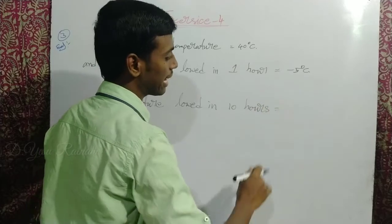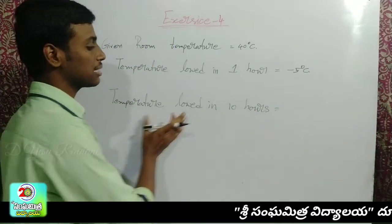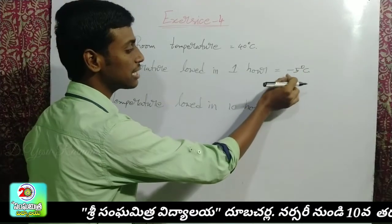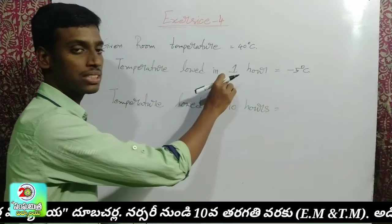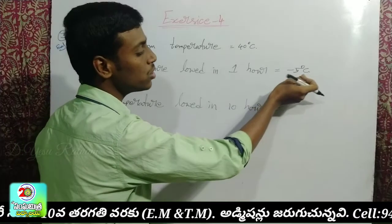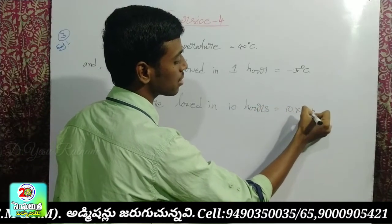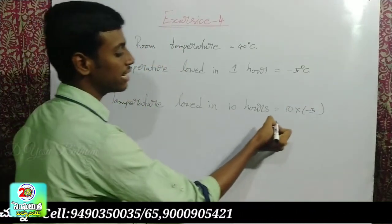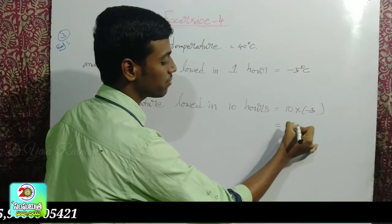10 hours after, the temperature goes down. At 1 hour: minus 5 degrees. At 2 hours: 2 into 5. At 3 hours: 3 into 5. At 9 hours: 9 into 5. We take 10 hours: 10 into minus 5 equals minus 50 degrees.